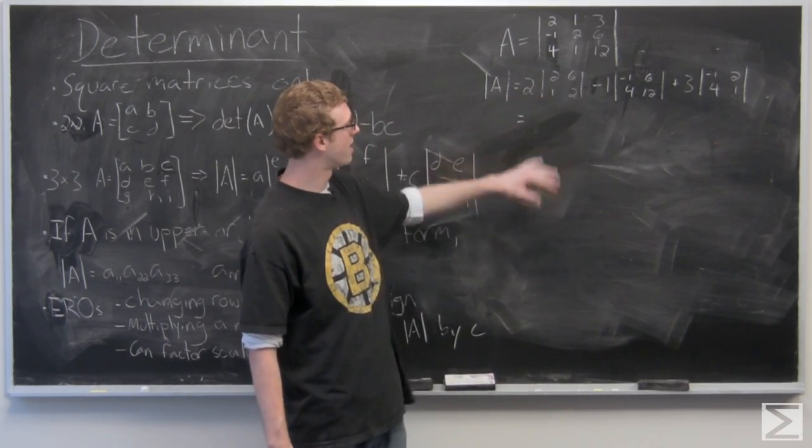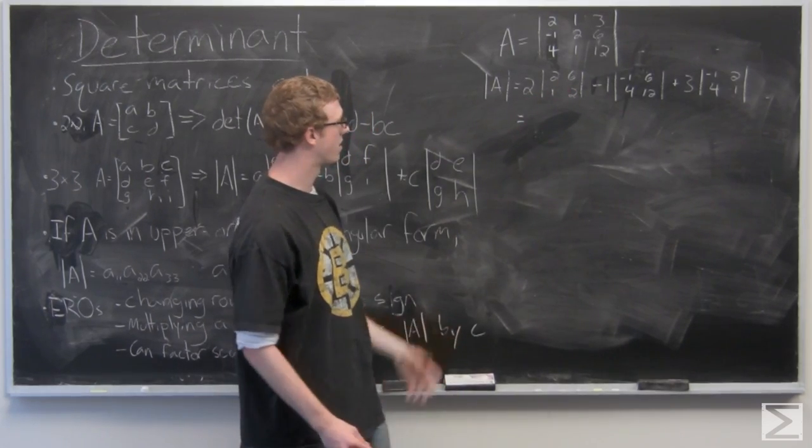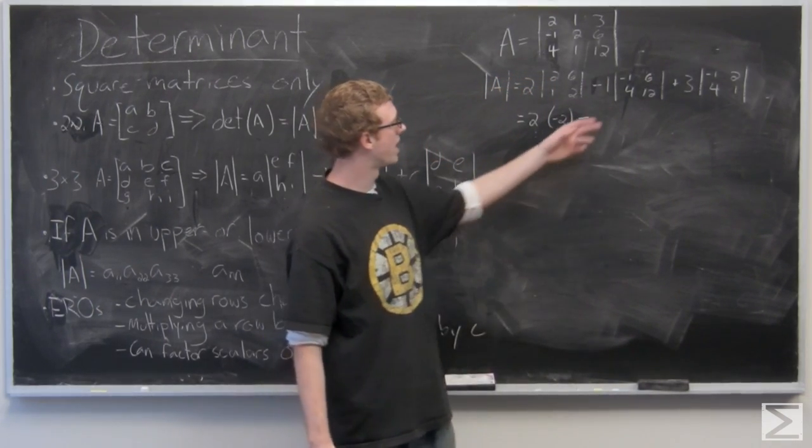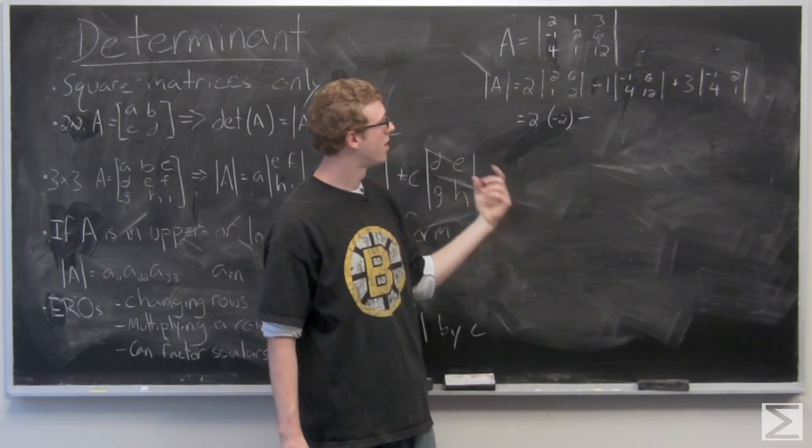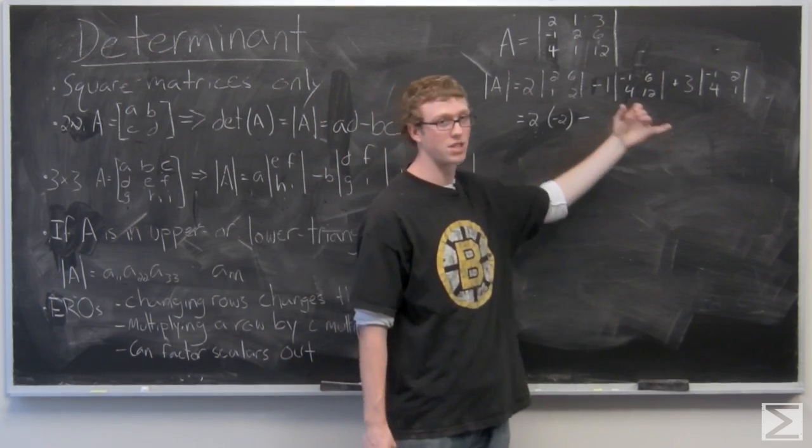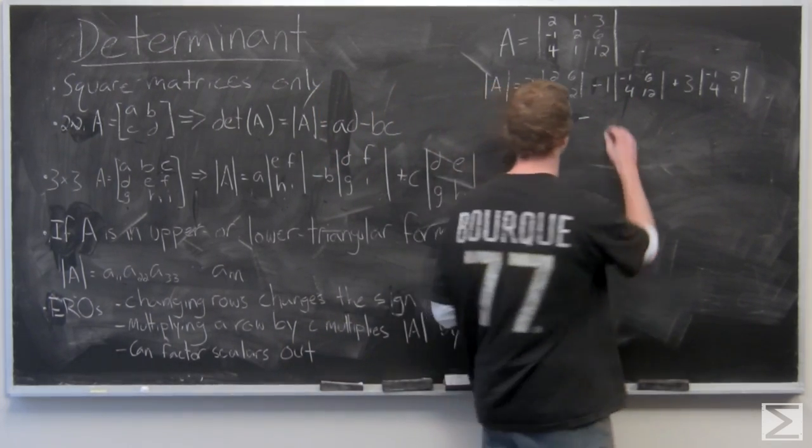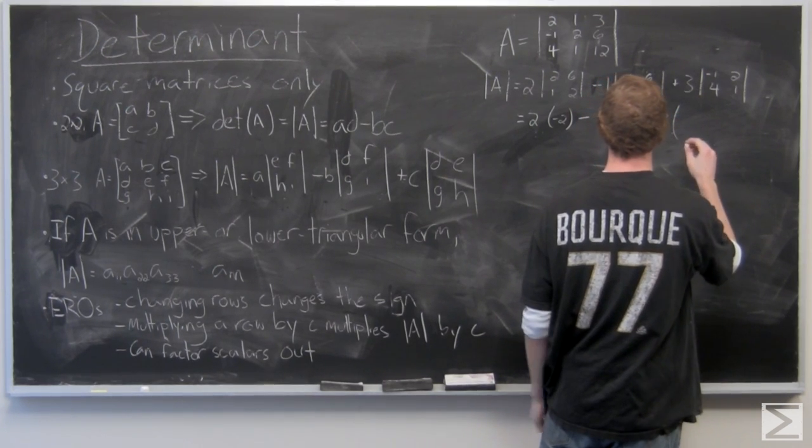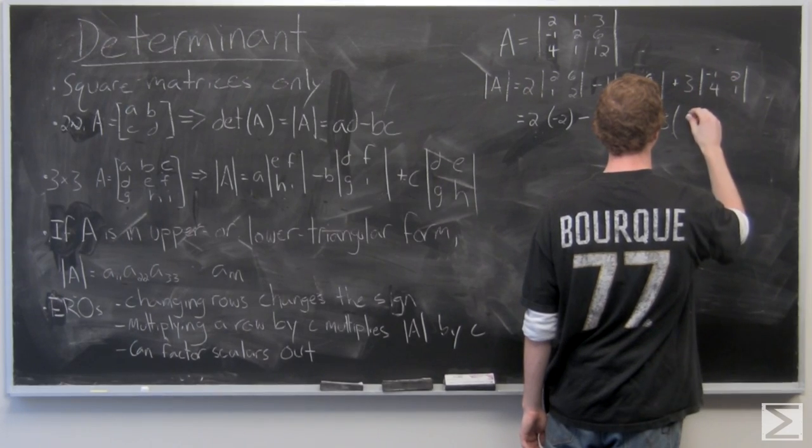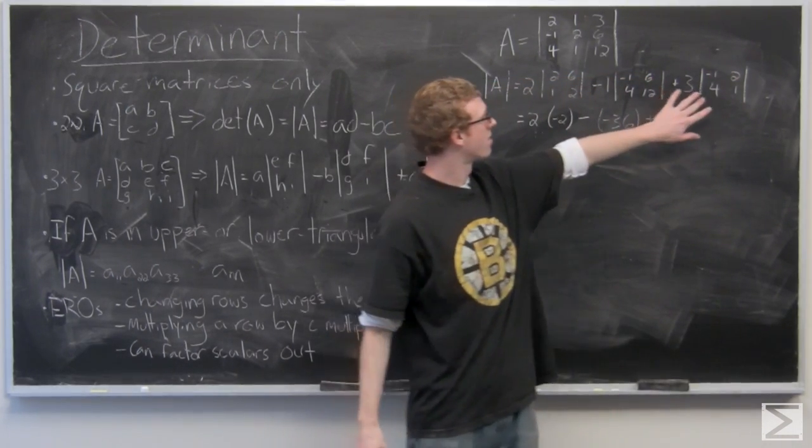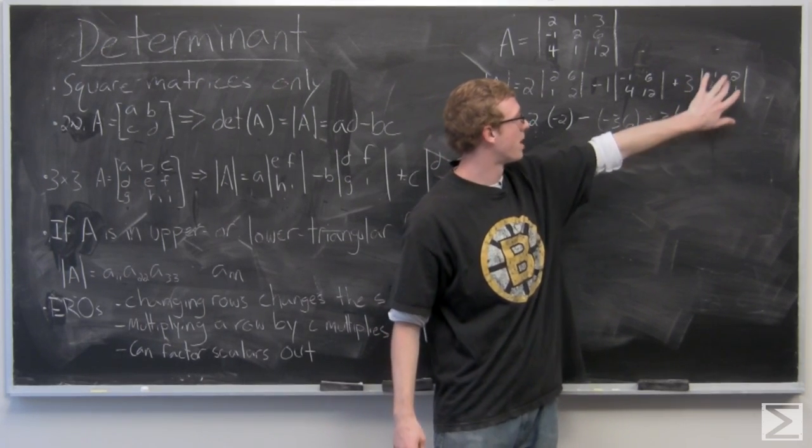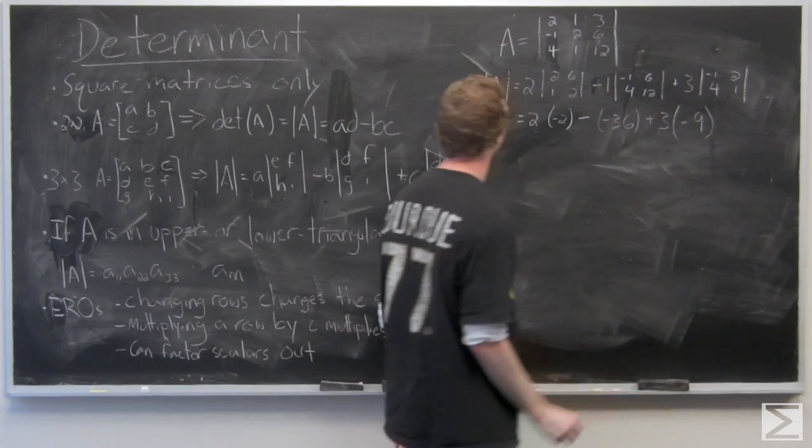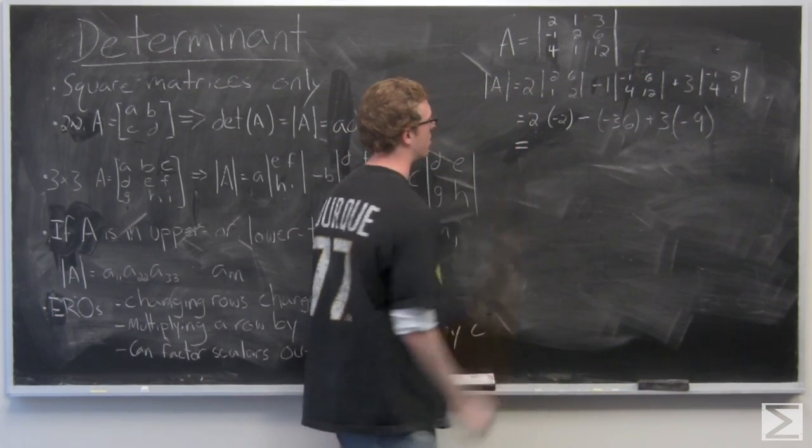So you have two and then the determinant inside is two times two minus six times one is negative two, minus one and then we have negative one times 12 is negative one minus six times four. Excuse me, negative one times 12 is negative 12 minus six times four is negative 36. Negative six. So we have in this rightmost column here, we have negative one times one minus four times two.